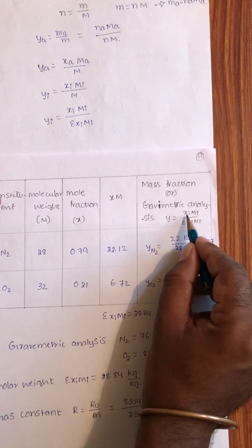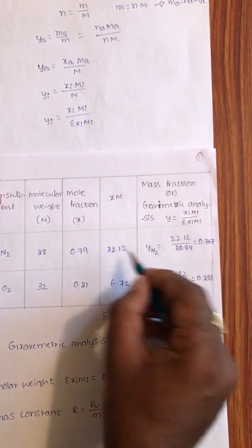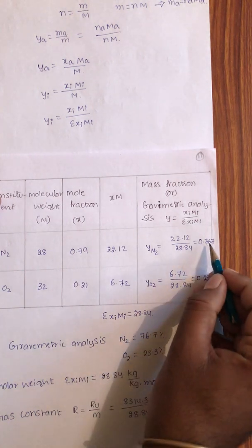X into YN2, that is 22.12 by series of Xi Mi, which is 28.84. You will get 0.767.